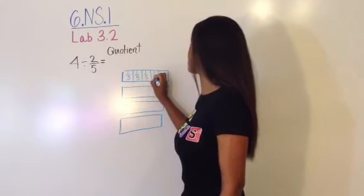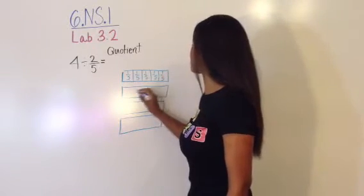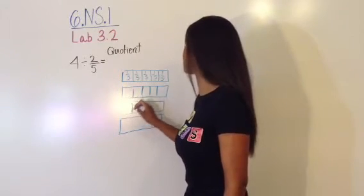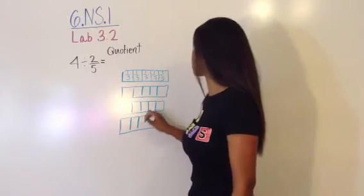So these are all a fifth. I'm just going to label the first one just for time's sake. But again, 1, 2, 3, 4 lines makes 5 parts. So there's our fifths. We're going to do the same thing in all four wholes.